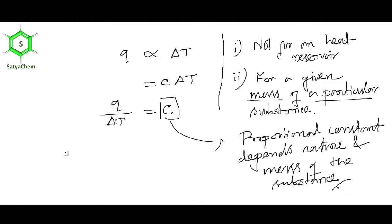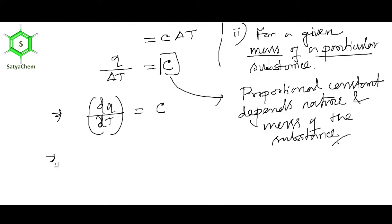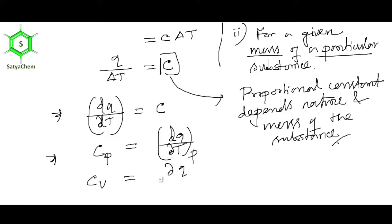Now I am going to write the differential form: dq/dT = C. If I calculate this proportionality constant at constant pressure, it will be Cp; at constant volume, it will be Cv. I am using partial differentiation notation because we are differentiating Q with respect to T at constant pressure or constant volume.